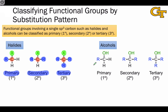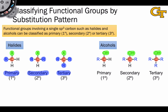A second functional group that we classify similarly are the alcohols, which contain a hydroxyl or OH group bound to an SP3 or tetrahedral carbon atom. Once again, we can talk about the central carbon atom using the nomenclature of primary, secondary, and tertiary, depending on the number of R groups bound to it. When the carbon atom has one R group, this is a primary alcohol; when the carbon has two R groups, this is a secondary alcohol; and when the carbon bears three R groups, this is a tertiary alcohol.